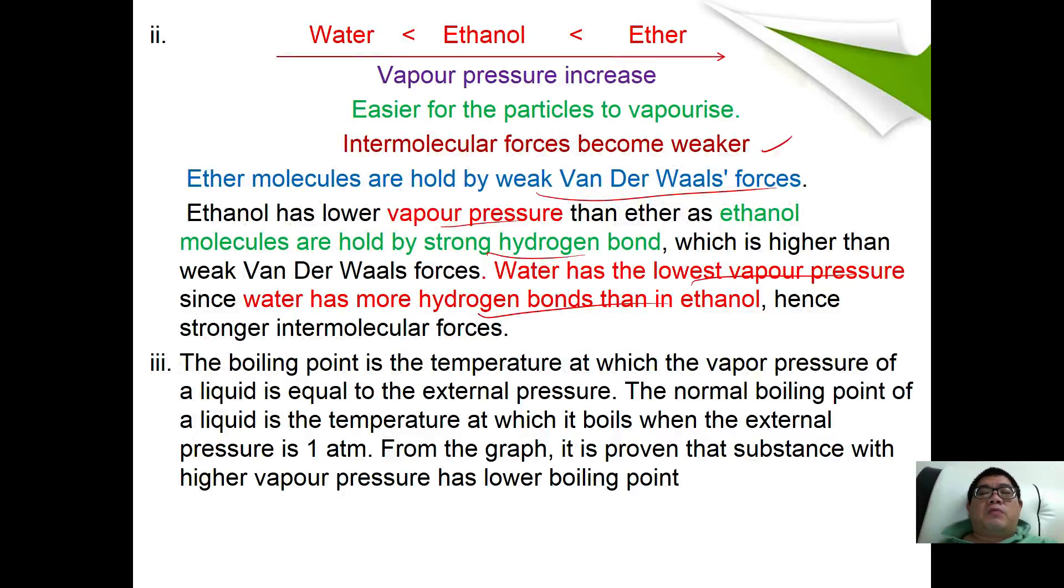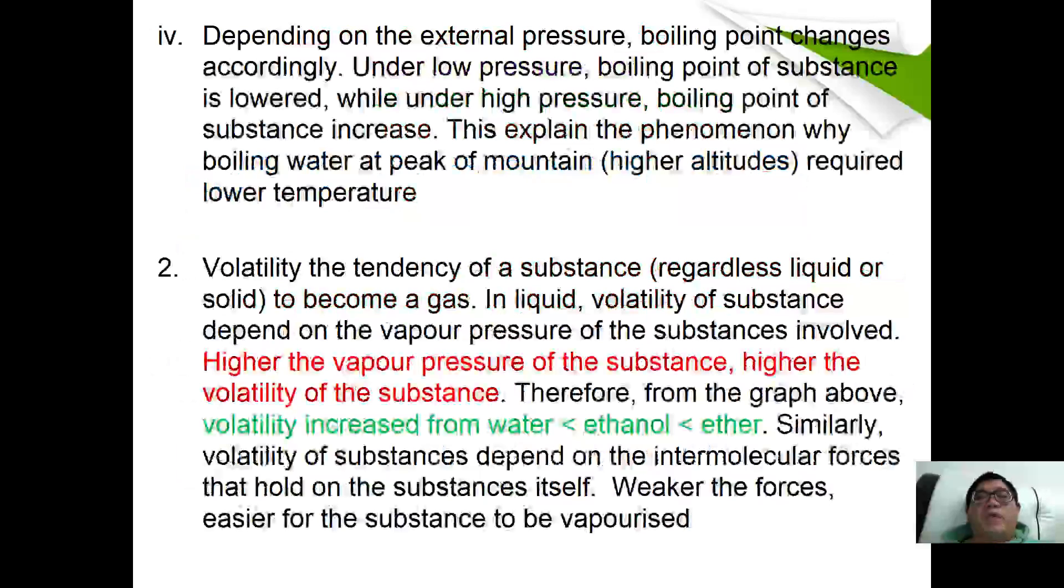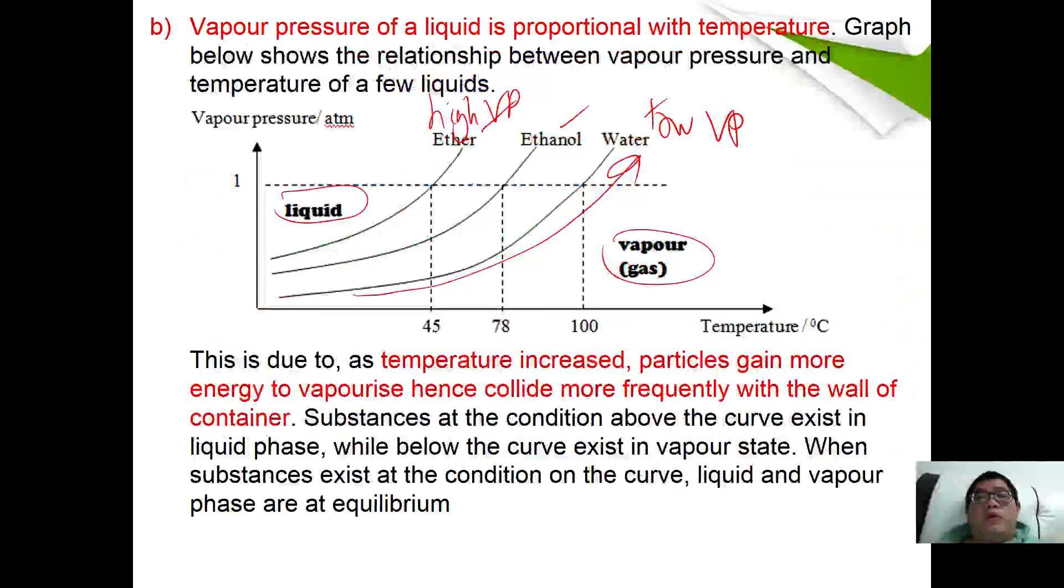The boiling point is the temperature at which the vapor pressure of a liquid is equal to the external pressure. The normal boiling point of a liquid is the temperature at which it boils when the external pressure is 1 atmosphere. From the graph, it is proven that substances with high vapor pressure have lower boiling points. At 1 atmosphere, ether boils at 45 degrees, ethanol at 78, while water is 100.